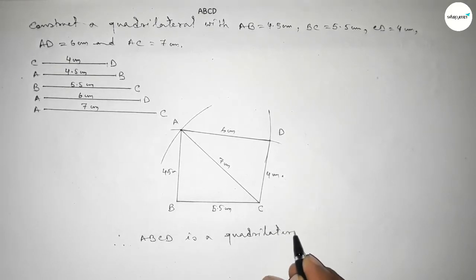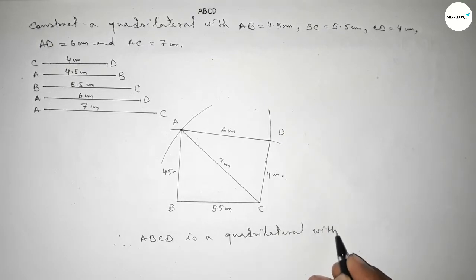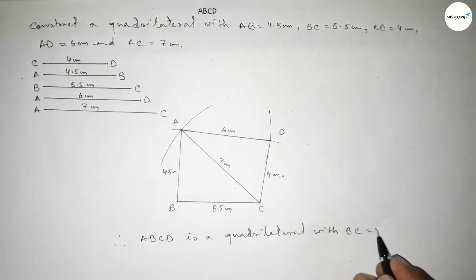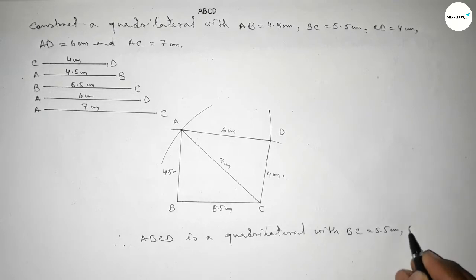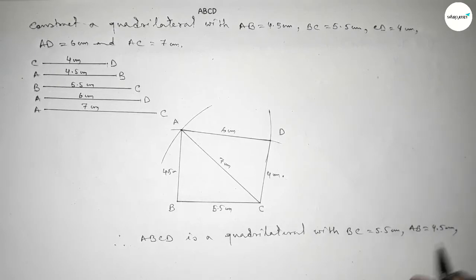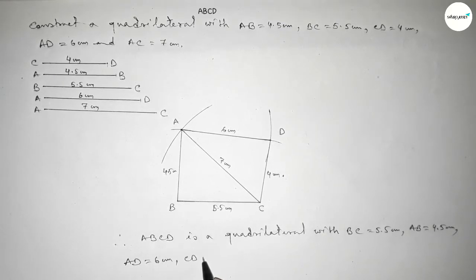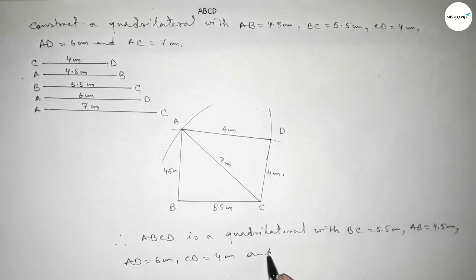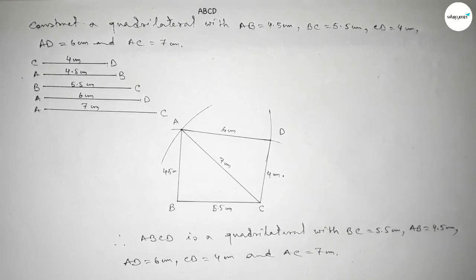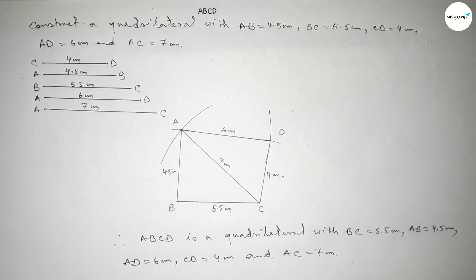With given sides AB equal to 4.5 centimeter, BC equal to 5.5 centimeter, CD equal to 4 centimeter, AD equal to 6 centimeter, and diagonal AC equal to 7 centimeter. That's all. Thanks for watching. If this video is helpful to you then please share it with your friends. Thanks for watching.